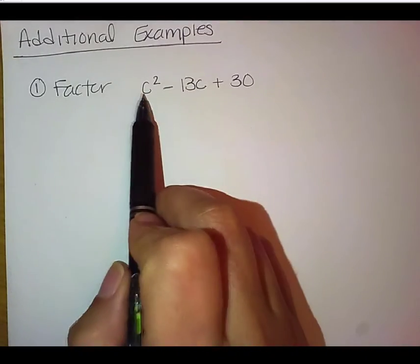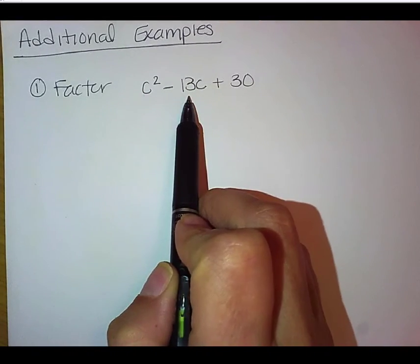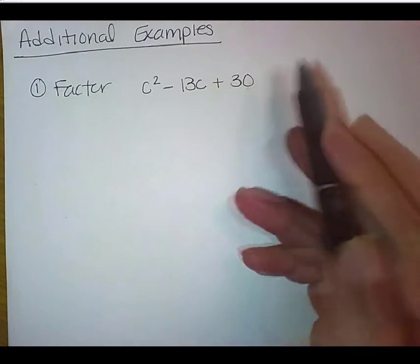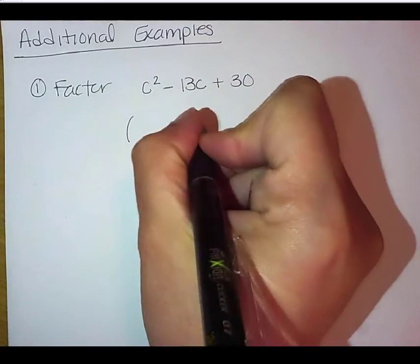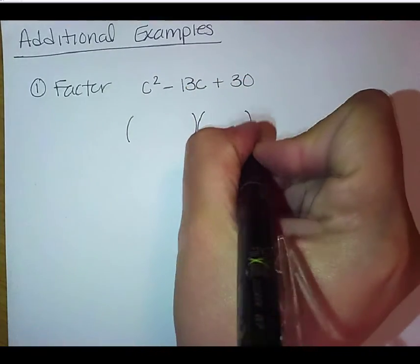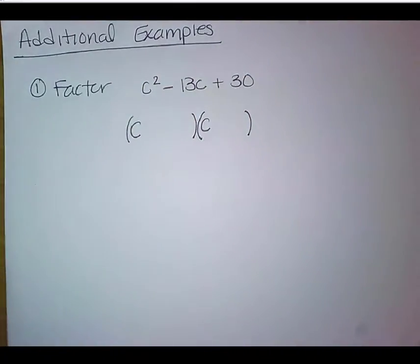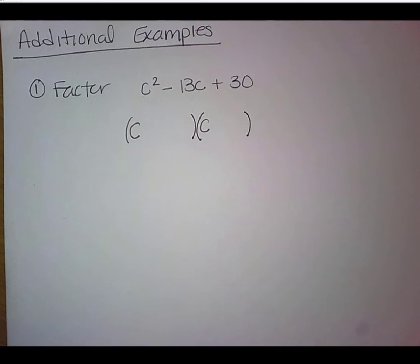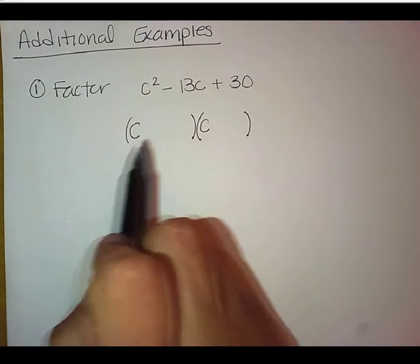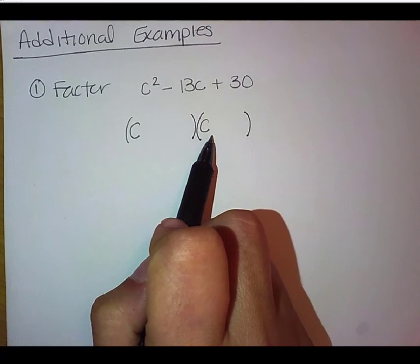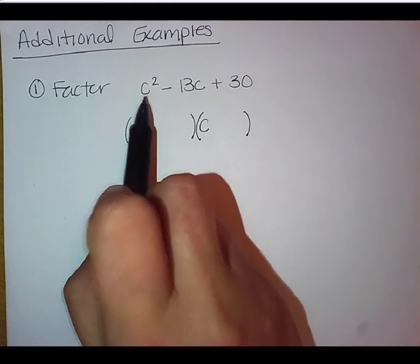So we are going to factor c² minus 13c plus 30. So again, we're going to start off with our parentheses. Remember, it doesn't matter whether I'm using the letter x, the letter c, or the letter r. It's just a variable that we're using in place of a number. So we're going to put c and c at the front of each one of our parentheses because c times c gives us our c².